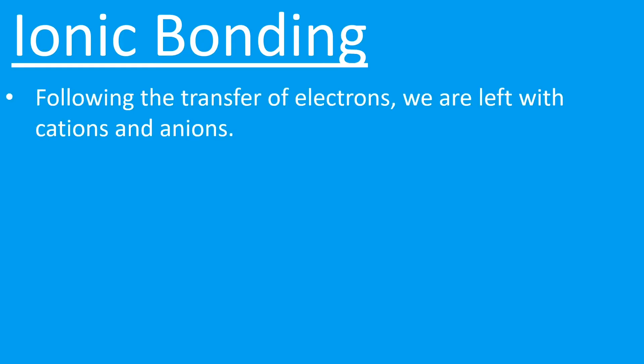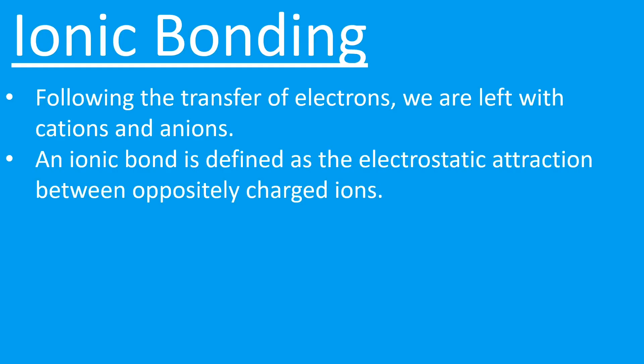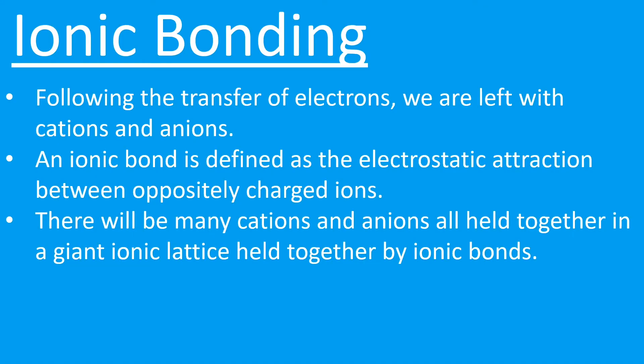So what is ionic bonding? Following the transfer of electrons from the metal to the non-metal, we are left with positively charged cations on the metal and negatively charged anions on the non-metal. An ionic bond is defined as the electrostatic attraction between oppositely charged ions. There will be many cations and many anions when this transfer of electrons takes place, which means we end up with a giant ionic lattice held together by ionic bonds.